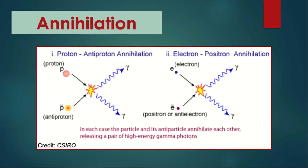The subatomic particles referred to here are protons and electrons, and they each have a counterpart antiparticle. The antiparticle of a proton is an antiproton, and the antiparticle of an electron is called a positron. During annihilation, the subatomic particle and its antiparticle collide, releasing photons — energy is released. In each case, the particle and its antiparticle annihilate each other, releasing a pair of high-energy gamma photons.